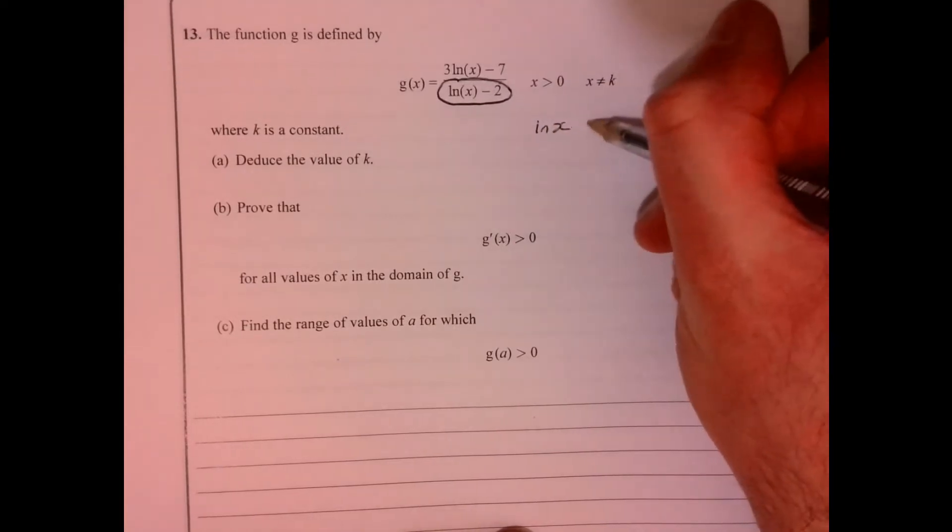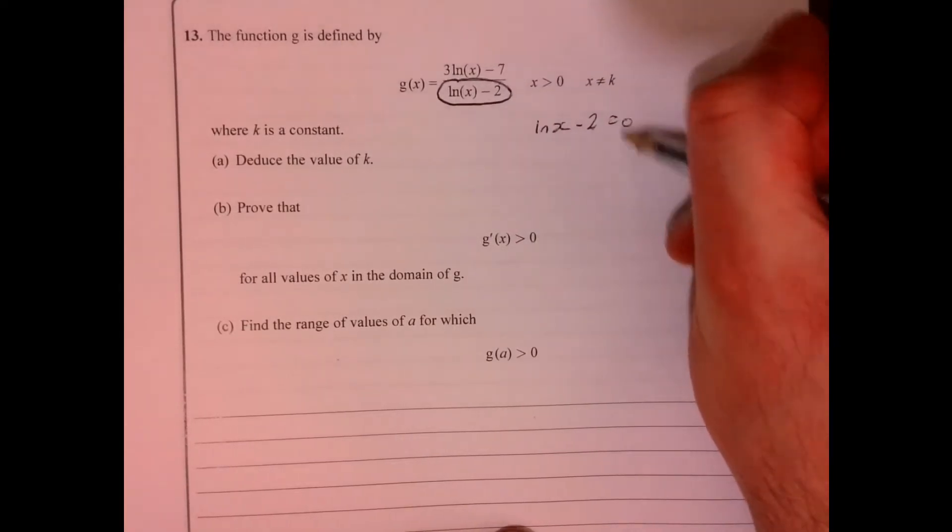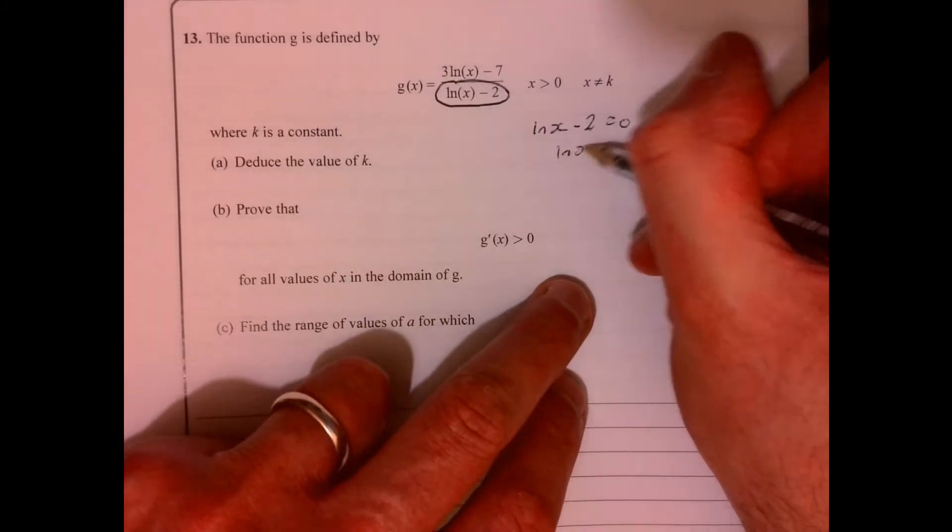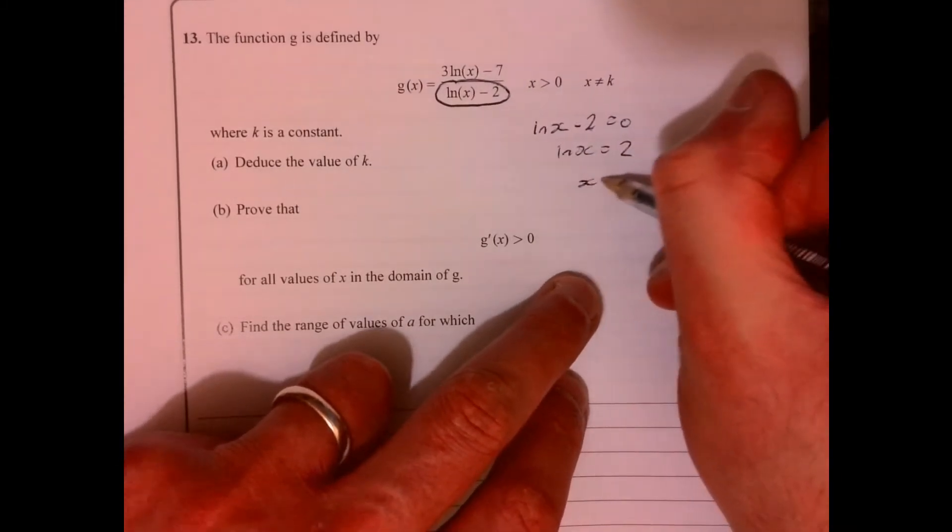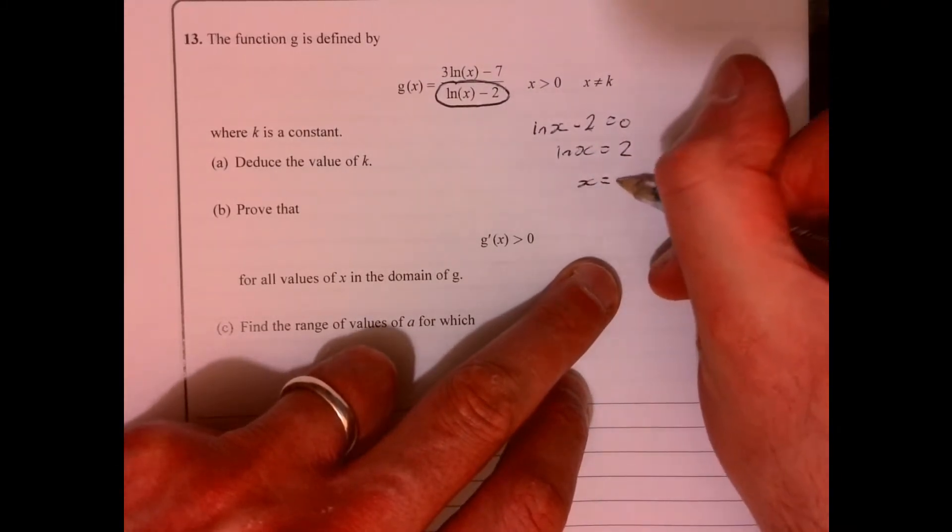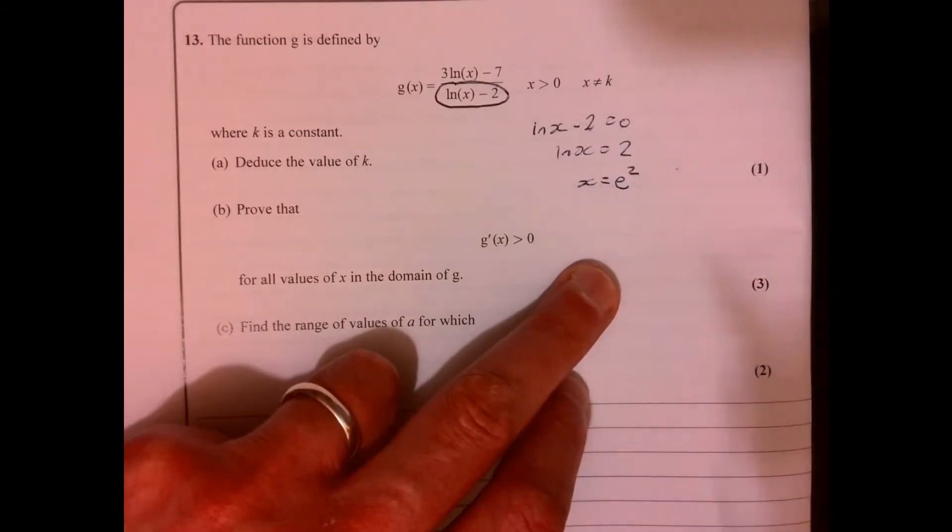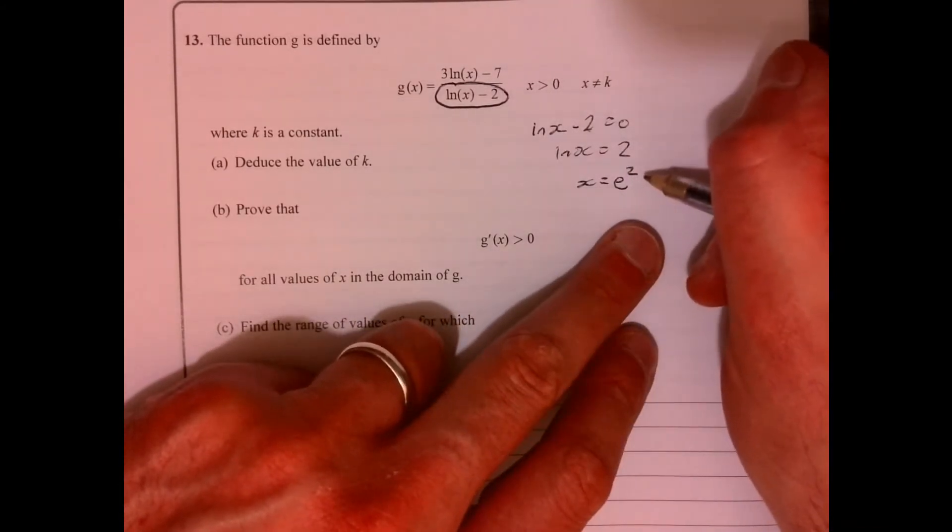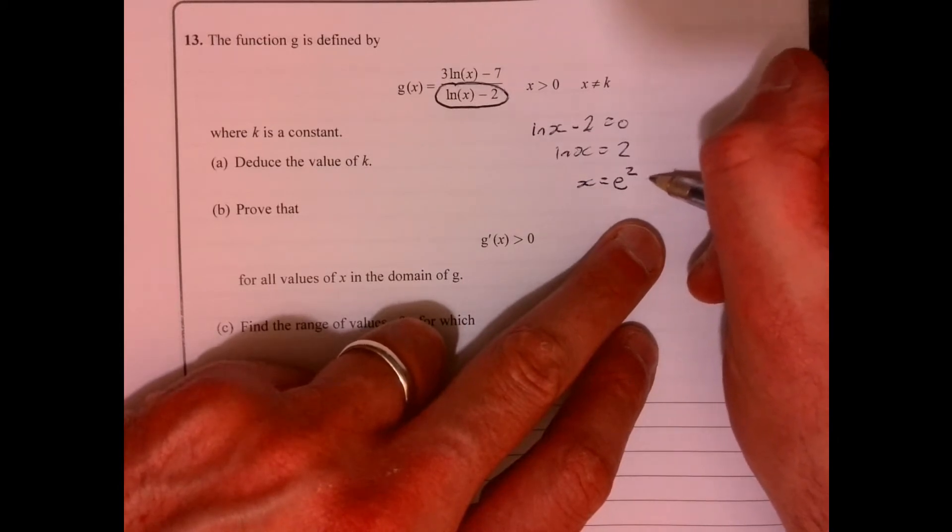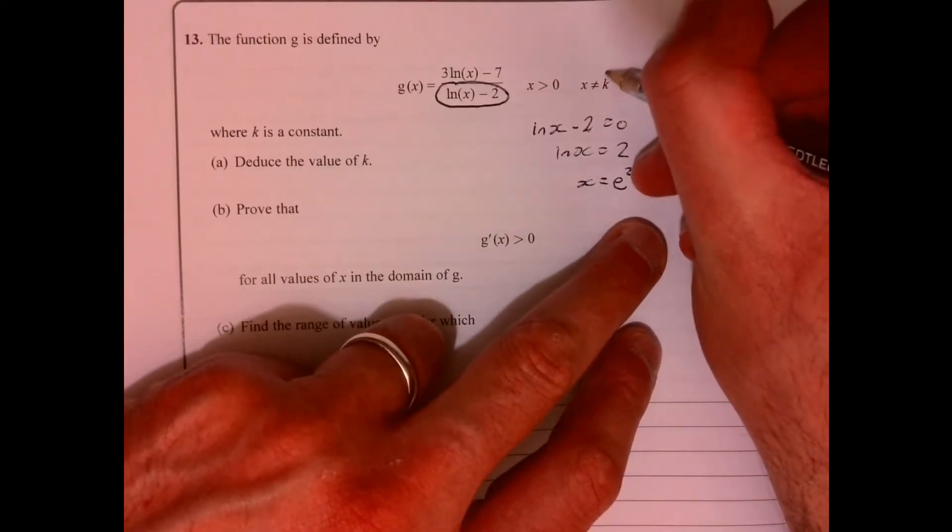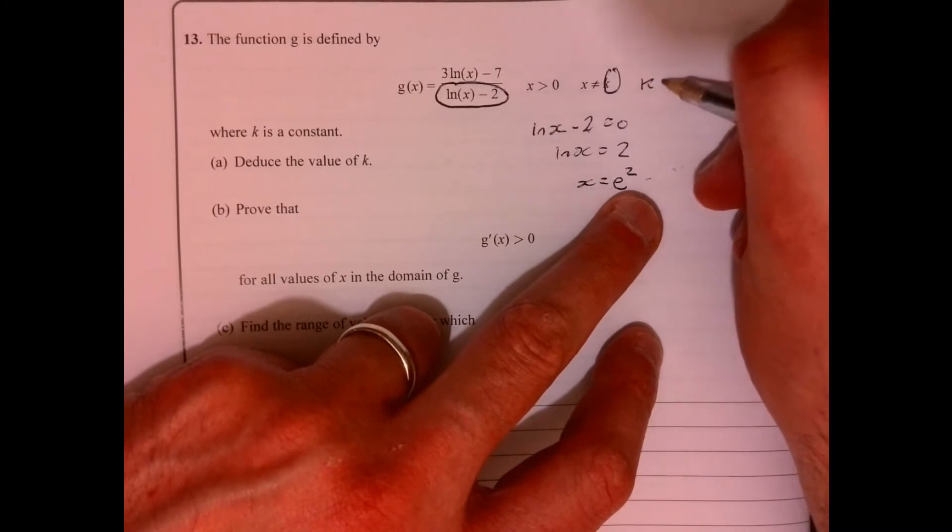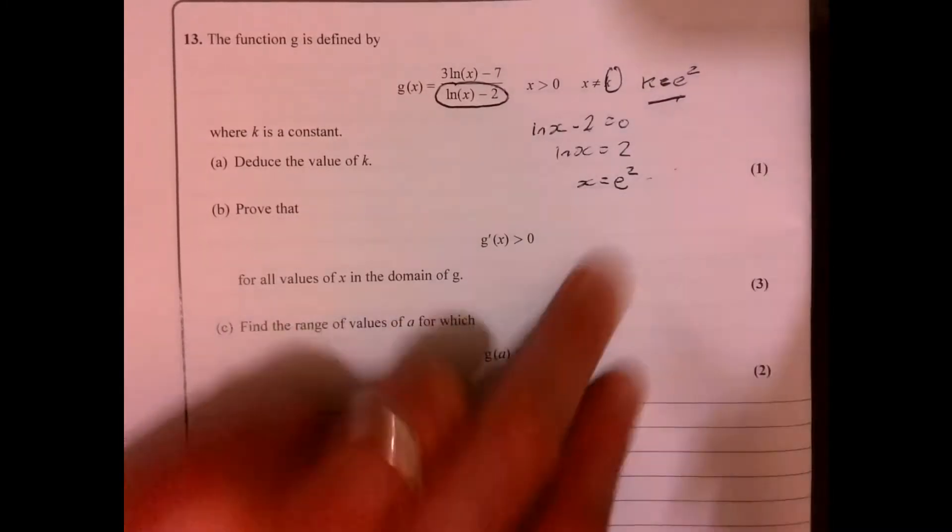So if we think about ln x minus 2 equals 0, add 2 to both sides. So ln x equals 2. So x equals e to the 2. Now, it doesn't mean that x is equal to e to the 2. That's the value of k. So k must equal e to the 2.